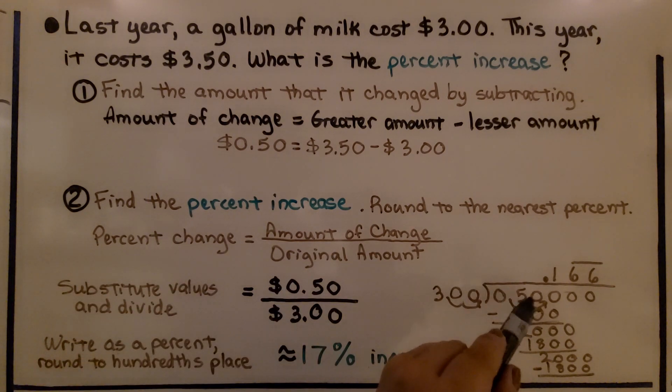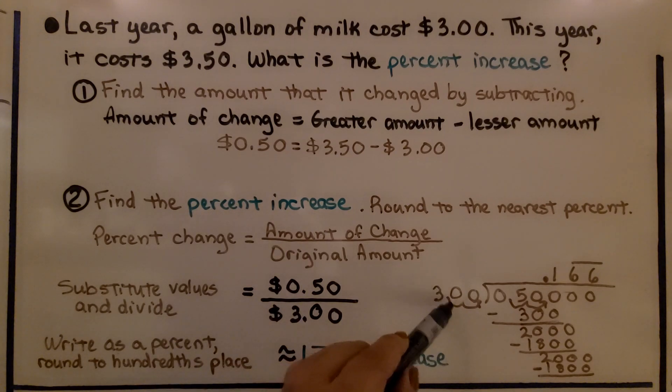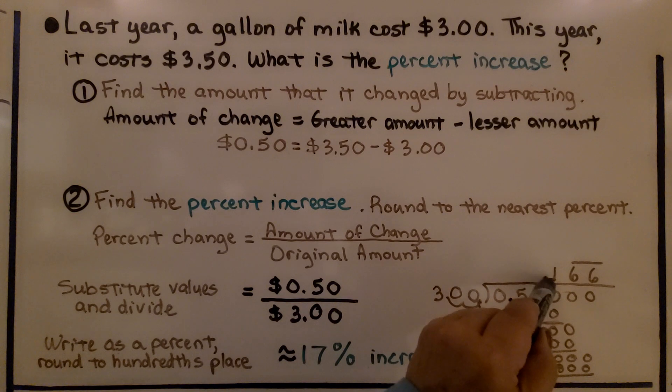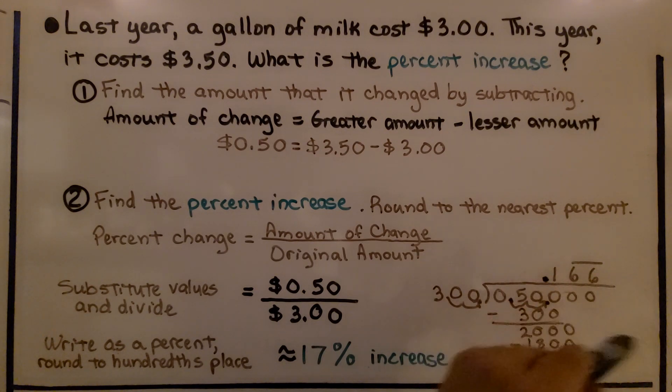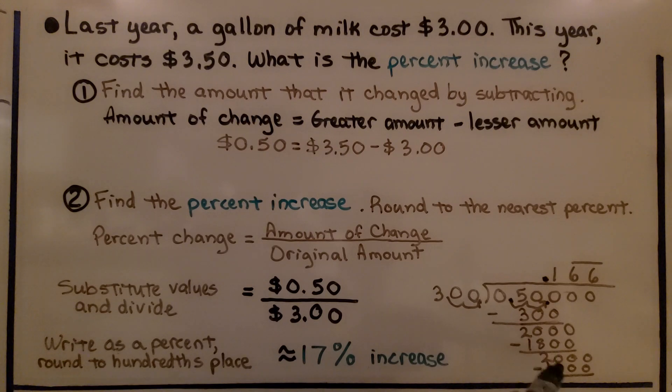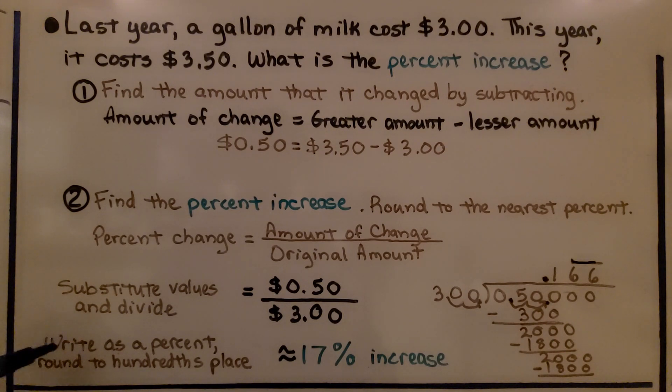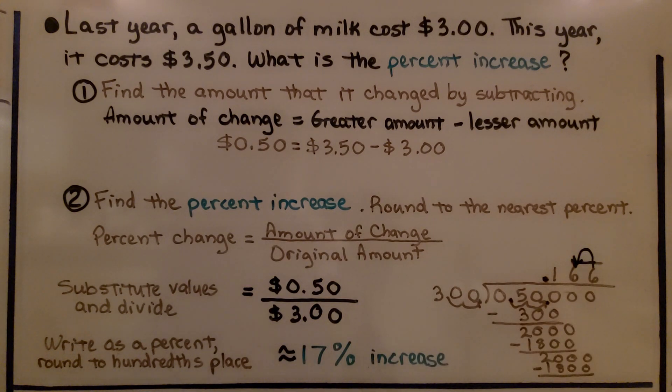That means the $0.50 is going to be on the inside as we do long division. And we've got two decimal spots in this $3. We need to move it over to here, which means we need to move over this decimal point to here. Then it's going to go straight up. And as we do our long division, we get a .166, and then the 6 is going to repeat because we're going to keep getting $2,000 minus $1,800. We can just put a bar over it, and we write as a percent and round to the hundredths place. This 6 tells this 6 to round up to a 7, so we have 17%. It was a 17% increase.